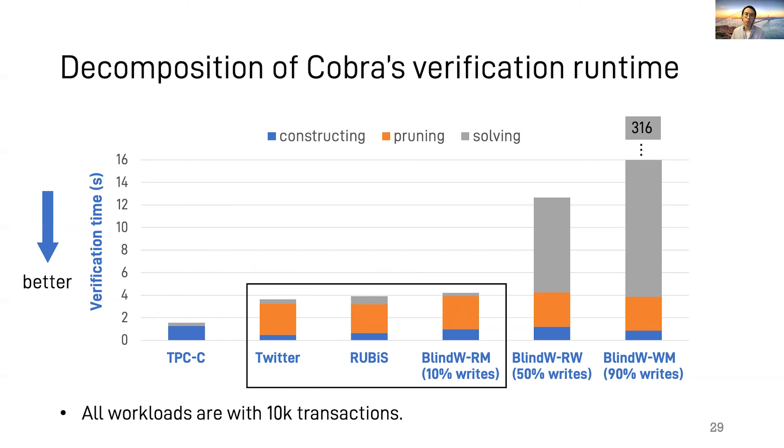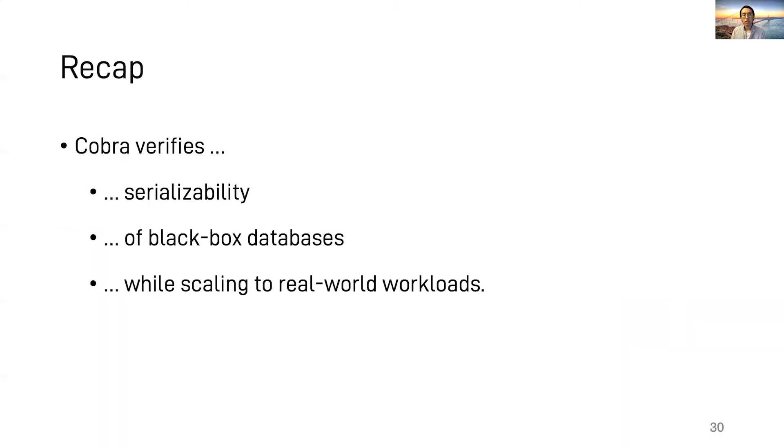In benchmarks with many reads and read-modify-writes, the dominant component is pruning. Because after pruning, the search space is small for SMT solvers, and the pruning has a fixed running time for a certain graph size. In benchmarks that have the same or more writes than reads, solving is a much larger contributor. Because Cobra cannot eliminate as many constraints, leading to a large search space for SMT solvers. But in real-world online transactional workloads, write-dominant cases are rare.